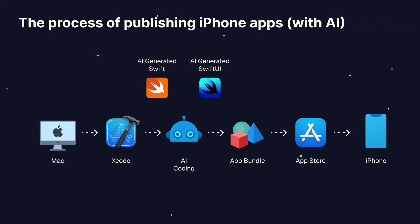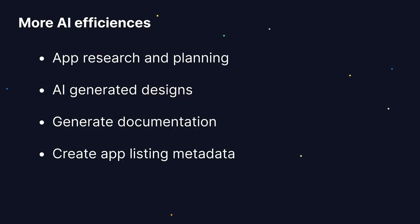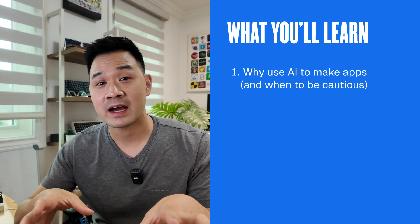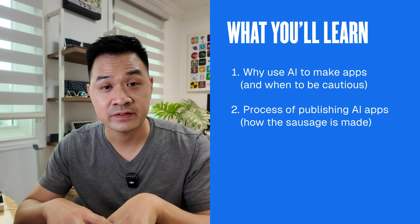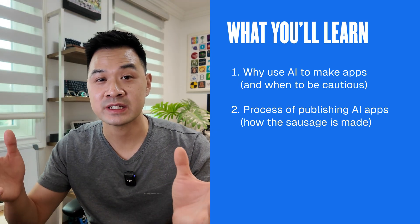After AI generates your code, the rest of the process is the same — you're still going to compile the code into a bundle and submit that bundle to the App Store. Aside from the coding part, AI can help us in other ways: doing app research and planning, generating design, producing documentation, and generating app listing descriptions and metadata. Overall, AI helps us speed up our workflow significantly if we know how to use it well. So in this lesson we covered when it's a good idea to use AI coding, when to be cautious, and how AI speeds up the normal app-making process.